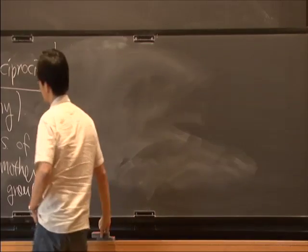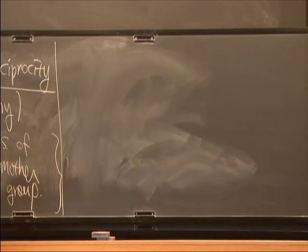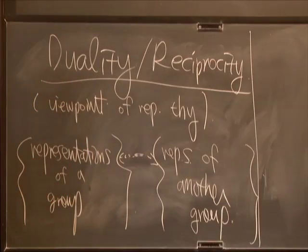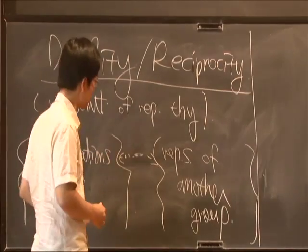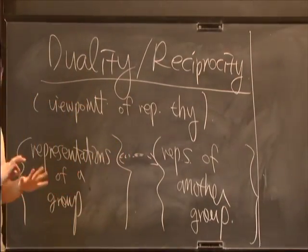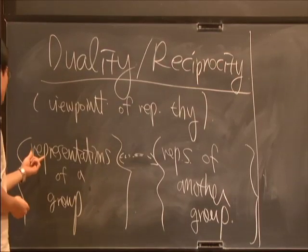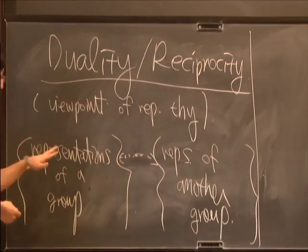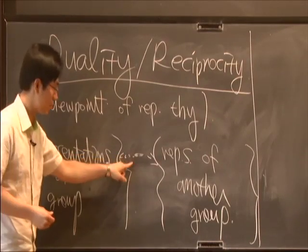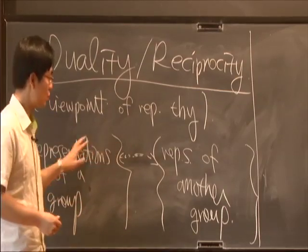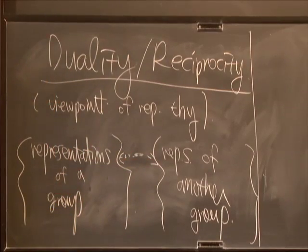There are some things you might want to expect of such an arrow whenever these things are nice. For instance, you should have a bijection of representations from both sides whenever it's defined. Or if bijectivity fails, it should fail for some reason we can understand. In representation theory, you not only classify representations, you study interesting invariants. If this arrow is nice, you should see some matching of invariants coming from both sides.